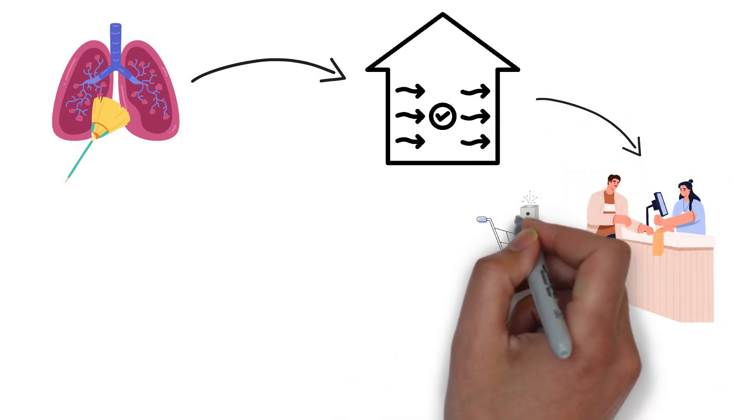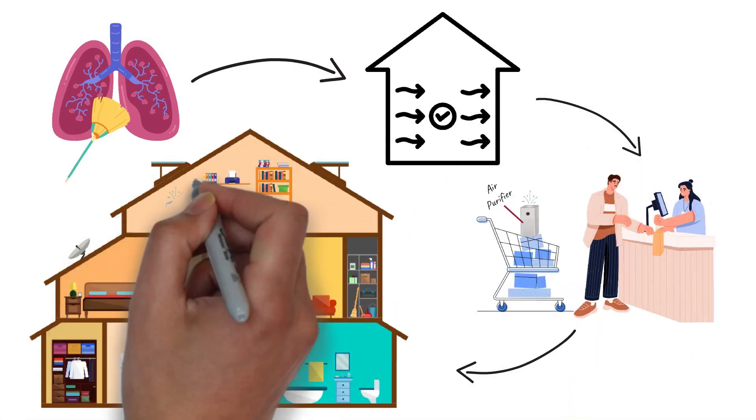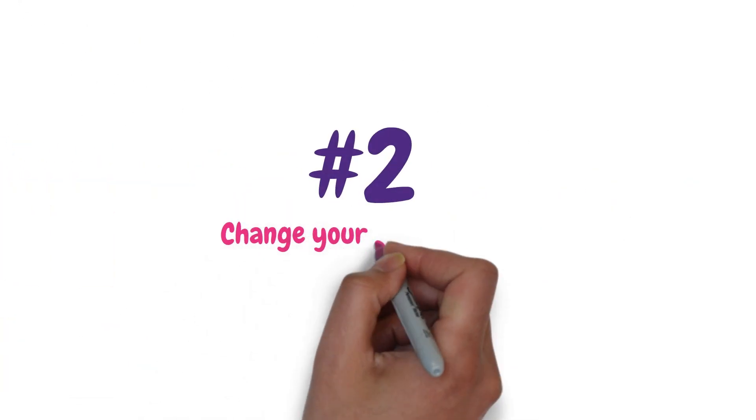We can purchase an air purifier that can be placed in individual rooms. The second way that we can clean our lungs is by changing our house filters.